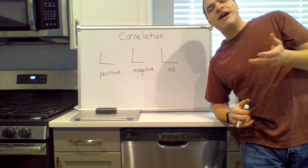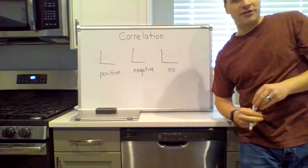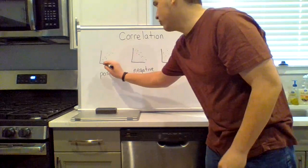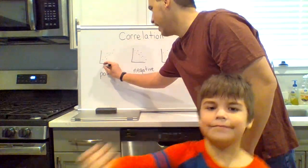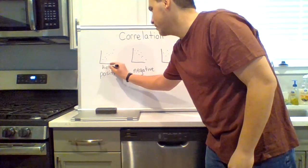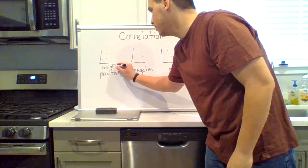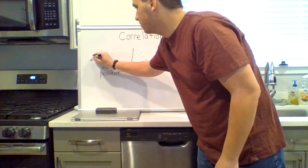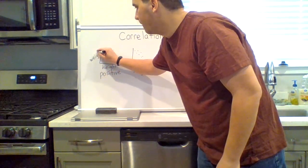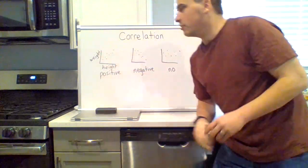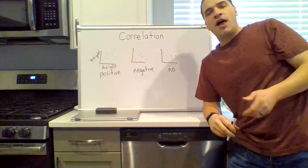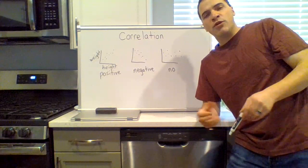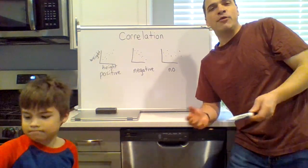For instance, in children, height and weight are correlated. In children, elementary school age, the taller a child is, typically the more they weigh because they're both getting older.